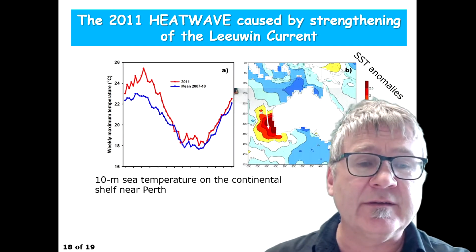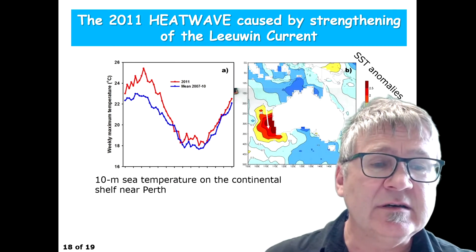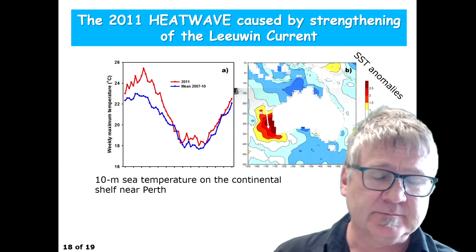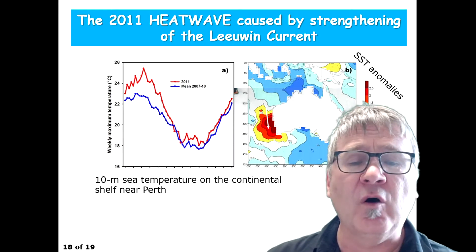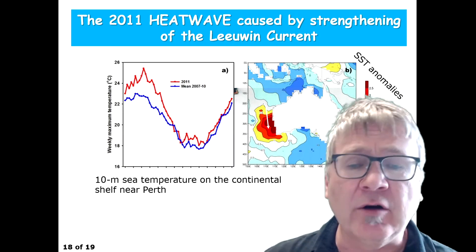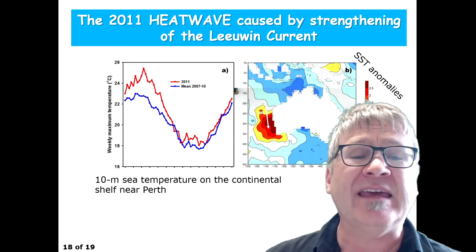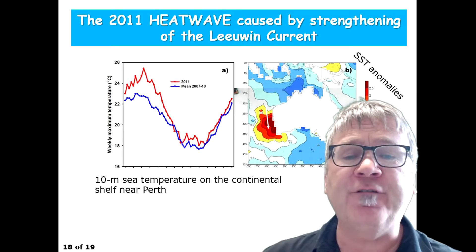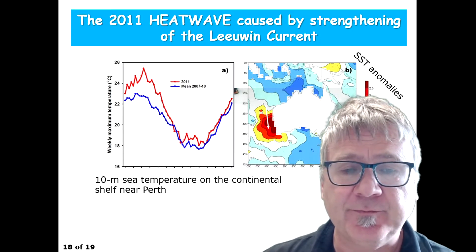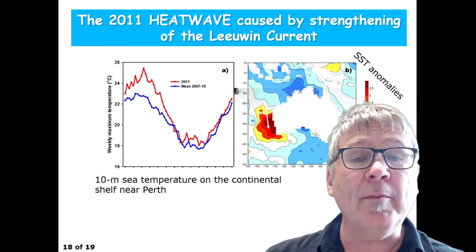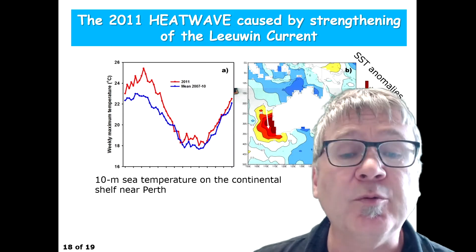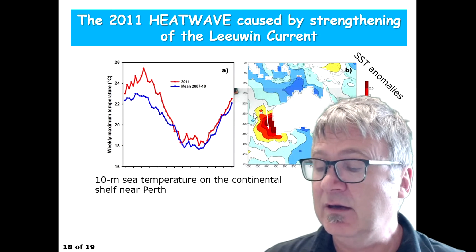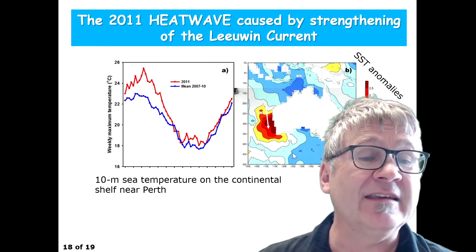If you see an image like this — sea surface anomalies, positive anomalies — what really happens is that this feature is caused by a strengthening of the Lewin current. The Lewin current became stronger and moved warmer water farther southward. If you shift warmer water more southward, you create a warm water anomaly, and this is the reason why you get this warm water feature here — the heat wave.